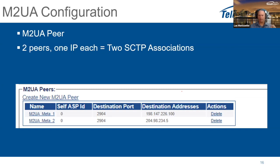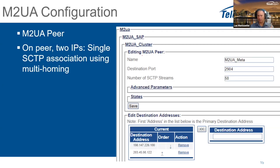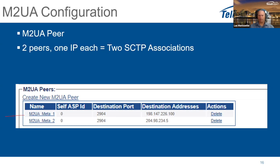It's also possible to create two different peers, each with one IP address, rather than one peer with two IP addresses. This effectively creates two different SCTP associations to the destination. For MetaSwitch MGC, we configure only one destination IP. You need to understand whether the other side is giving you one peer with two IPs or two peers with one IP each. One way to debug this is to check whether you see one or two initialization sequences on the remote side.